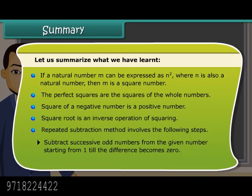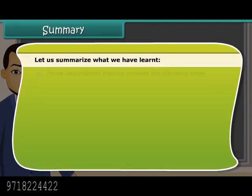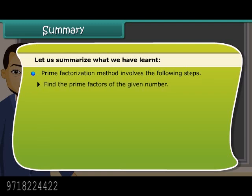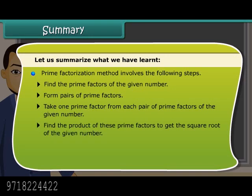Repeated subtraction method: subtract successive odd numbers from the given number starting from 1 till the difference becomes 0, then count the number of steps it took. Prime factorization method: find the prime factors of the given number, form pairs of prime factors, take one from each pair, and find their product to get the square root.